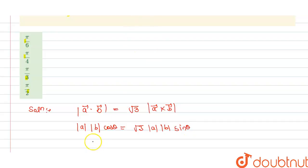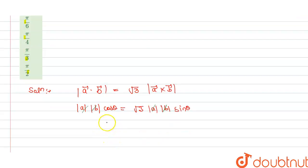So we have the A vector and B vector is cancel out here, so we get cos theta is equals to under root 3 sine theta.